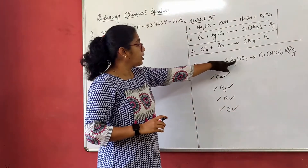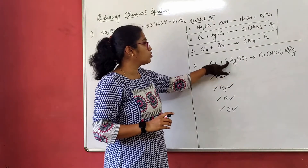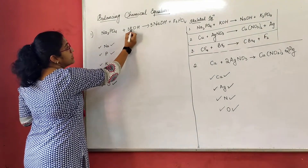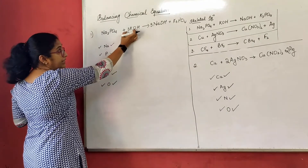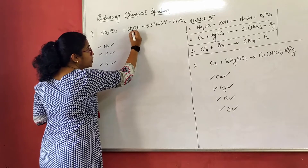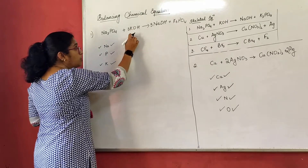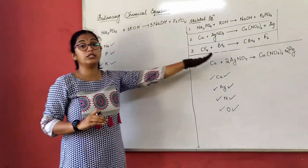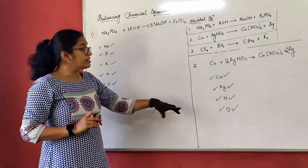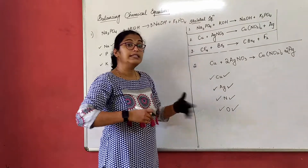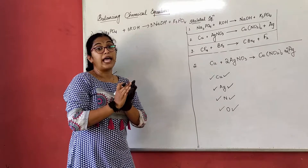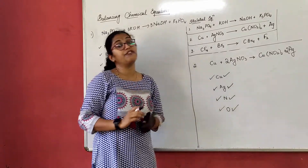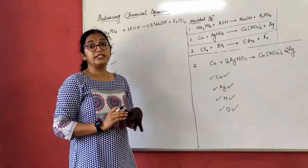One important difference to note: when oxygen atoms appear in different compounds within the same side, we add them — as we did with 4 plus 3 in the previous equation. But when oxygen is in the same compound multiplied by a coefficient, we multiply them — as with 2 times 3 equals 6 here. Do not get confused between adding and multiplying. This is why we do a second cross-verification: balancing one element can disturb another, requiring us to re-balance. This is the process of balancing a chemical equation.